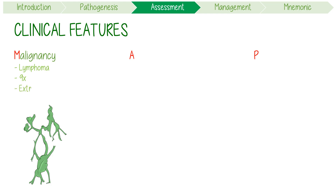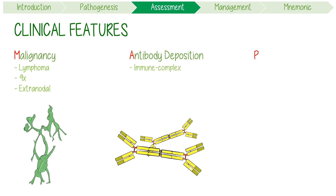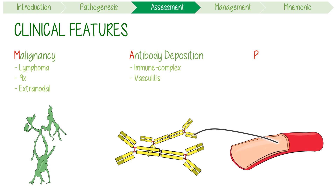The tumours are usually extranodal, meaning that they arise within exocrine glands. A stands for antibody deposition. Immune complex mediated disease often causes a strange vasculitis or dermatological stigmata like a rash.